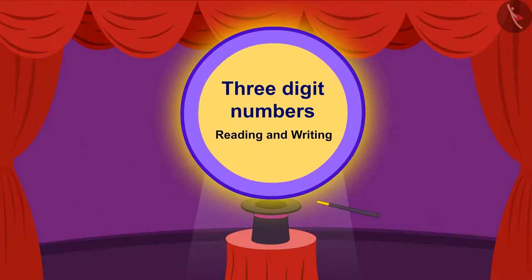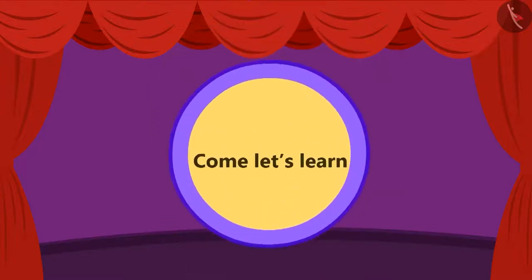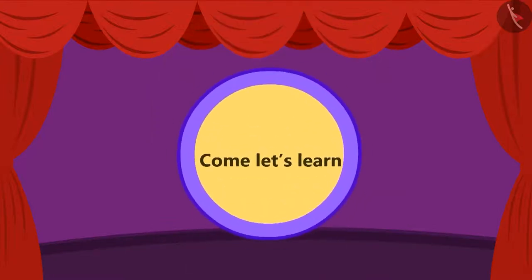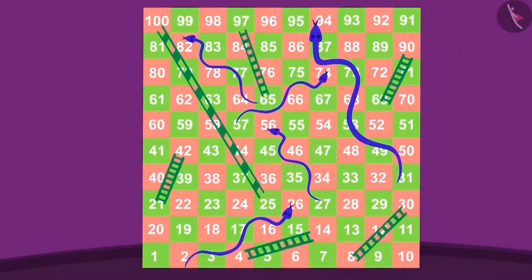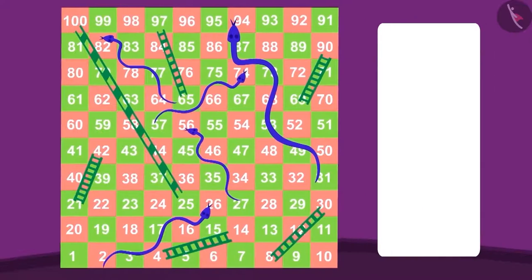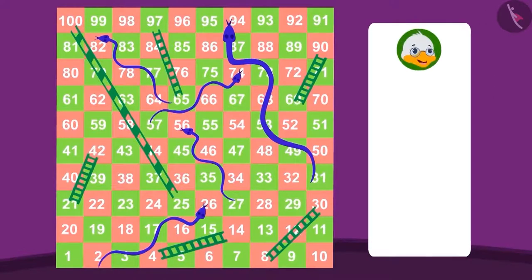Hello children, hope you are enjoying and having fun learning through our videos. Today we will learn about three digit numbers. Let's learn! Hey, look here, the game of snakes and ladders is going on. Badbole Badak Uncle, Bhola Donkey, Shere Khan, and Guggu Hippo are playing.